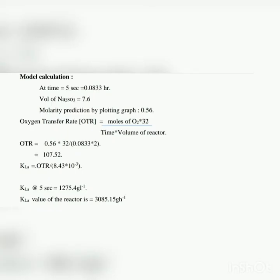Sample calculation for serial number 1 (t = 5 seconds): 5 seconds is converted to hours as 0.0833 h. Volume of Na2S2O3 = 7.6 mL; molarity from the standard curve plot = 0.56 M. OTR formula: moles of oxygen × 32 ÷ (time × volume of reactor). Calculation: (0.56 × 32) ÷ (0.0833 × 2) = 107.52. KLa = OTR ÷ (8.43 × 10⁻³) = 1275.4 g·L⁻¹.